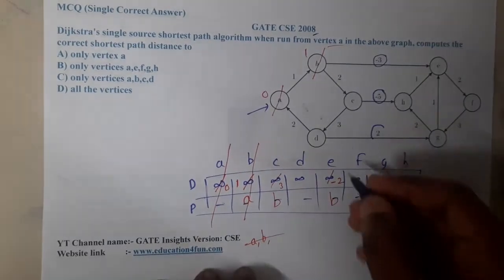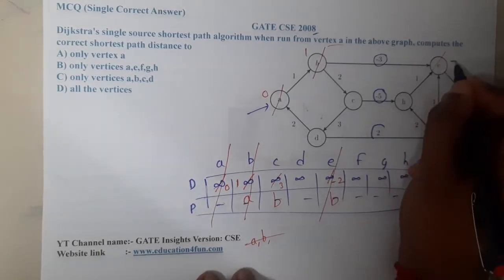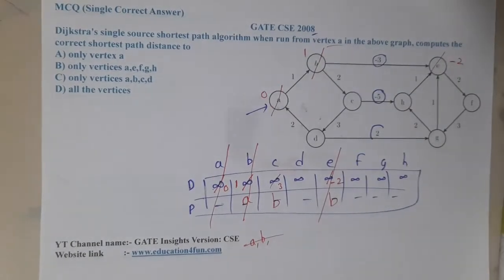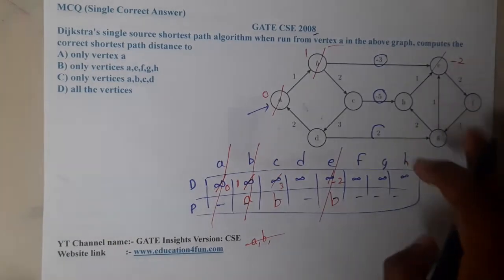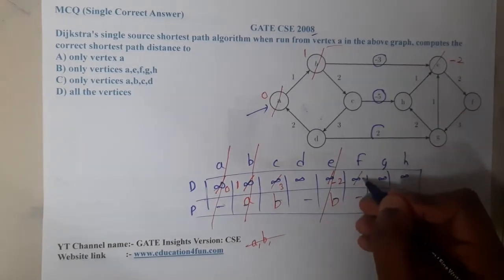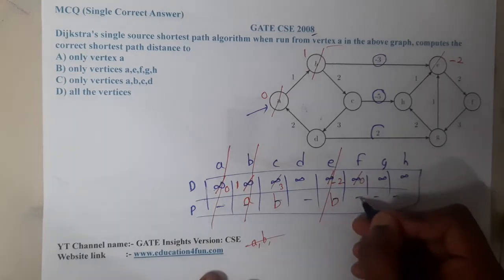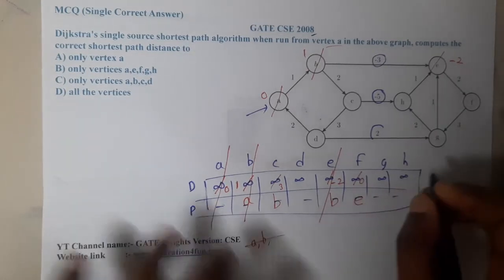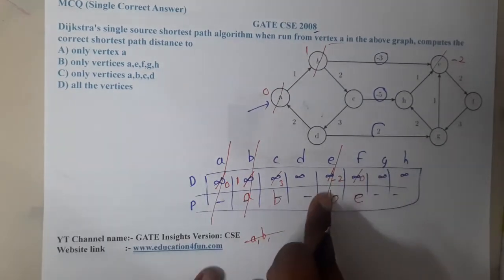Now what is the minimum value? E is the minimum value, so I now am going to e, so the cost is minus 2. From e where I can go, I can go to f, so minus 2 plus 2 the value is 0. So at a cost of 0 I can go up to f with the help of e. So now we are done with e and the only path from e is f.